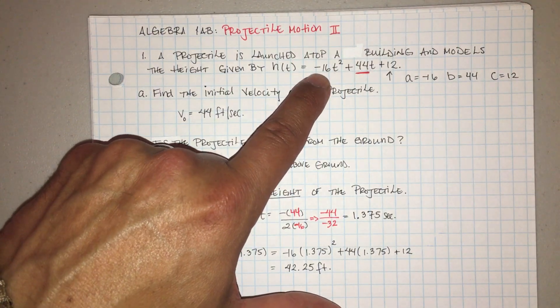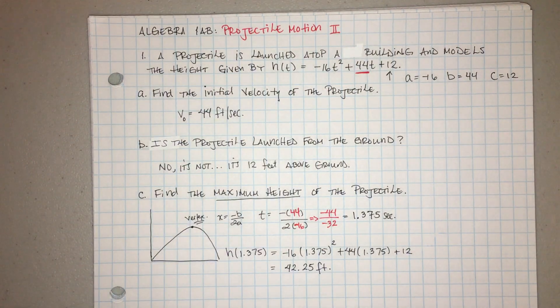Now it's always negative 16, so when you see that negative 16 the value is always in feet, but it'll also tell you.